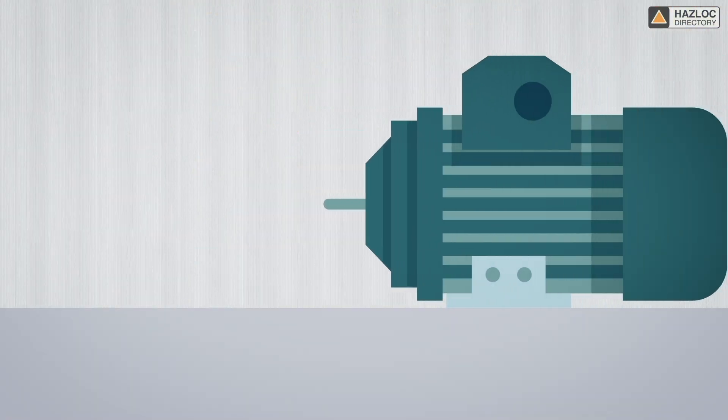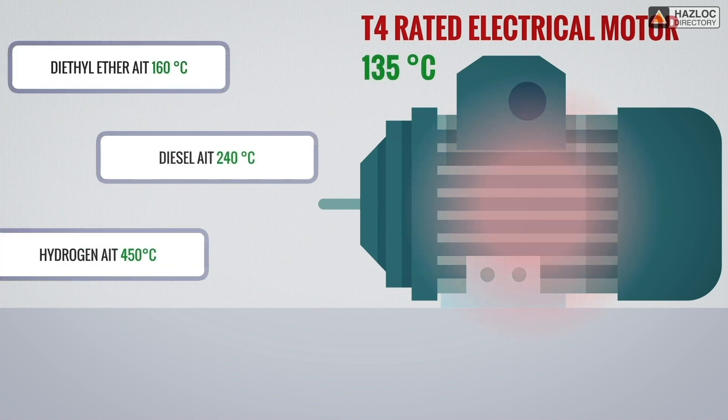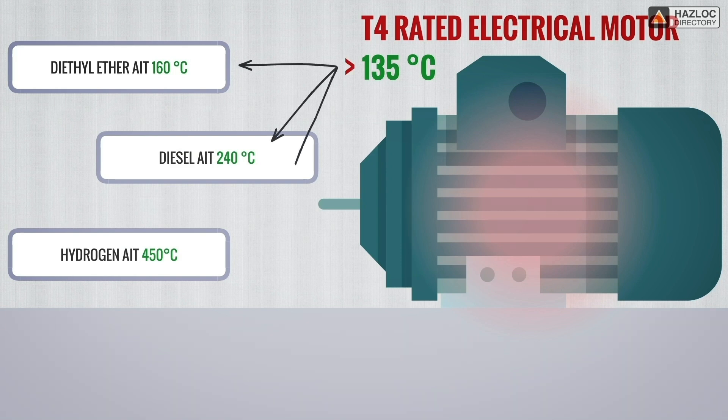Now this T4-rated electrical motor can be safely installed in an area when diethyl ether, diesel, or hydrogen are present because the minimum ignition temperature of these gases is higher than maximum surface temperature rise of our T4 motor.